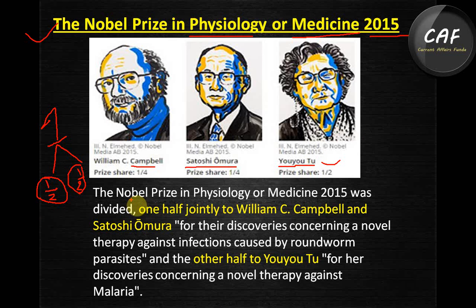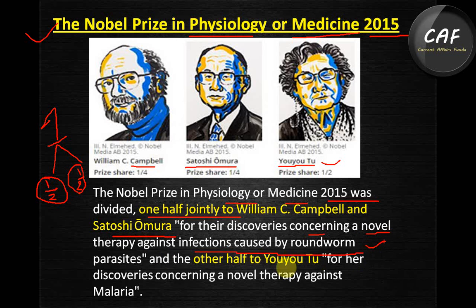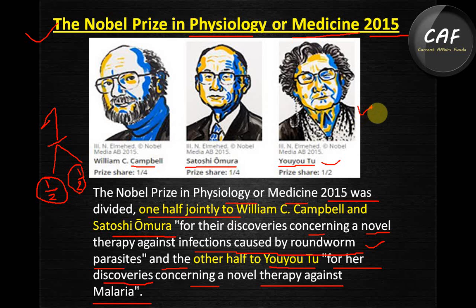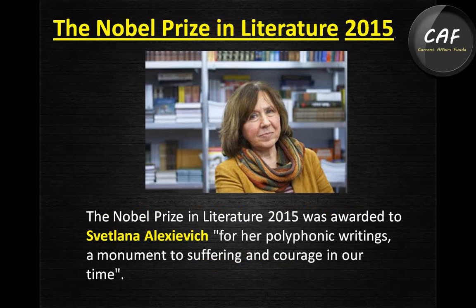The Nobel Prize in Physiology or Medicine 2015 was divided: one half jointly to William C. Campbell and Satoshi Omura for their discoveries concerning a novel therapy against infections caused by roundworm parasites, and the other half to Youyou Tu for her discoveries concerning a novel therapy against malaria.